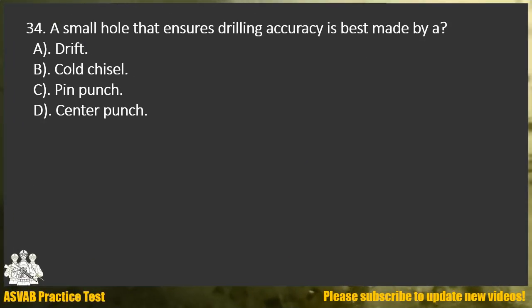Question 34. A small hole that ensures drilling accuracy is best made by: A. Drift. B. Cold chisel. C. Pin punch. D. Center punch.